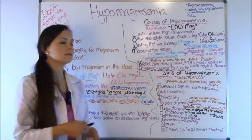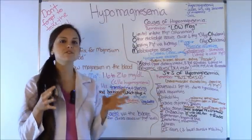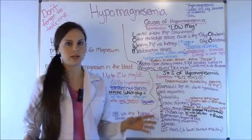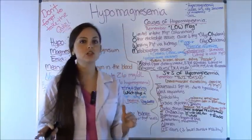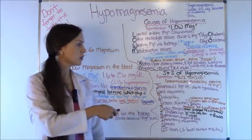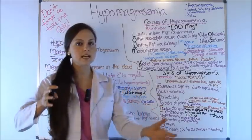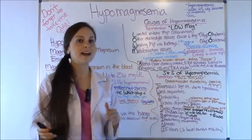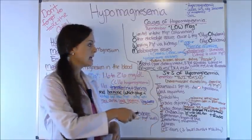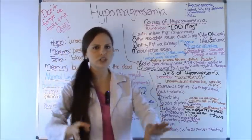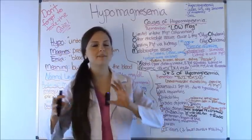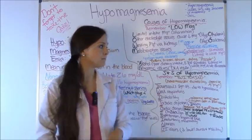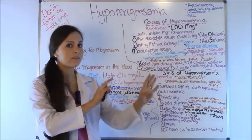Now let's look at the signs and symptoms of hypomagnesemia — how do these patients present? Remember the phrase TWITCHING. With low mag levels, you have neuromuscular excitability — everything is twitching and really excited. Your reflexes are very hyperreflexive, which is the complete opposite of high magnesium, where everything is lethargic and weak with diminished or absent deep tendon reflexes.